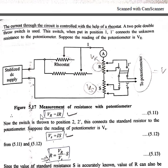The ammeter inserted in the circuit is for indicating whether the current flowing through the circuit is within the capacity of the resistor or not. The exact value of the current need not be known. The ammeter is just for watching the approximate current through R and S. It is desirable that the current be adjusted so that the voltage drop across each resistor is in the order of one volt.